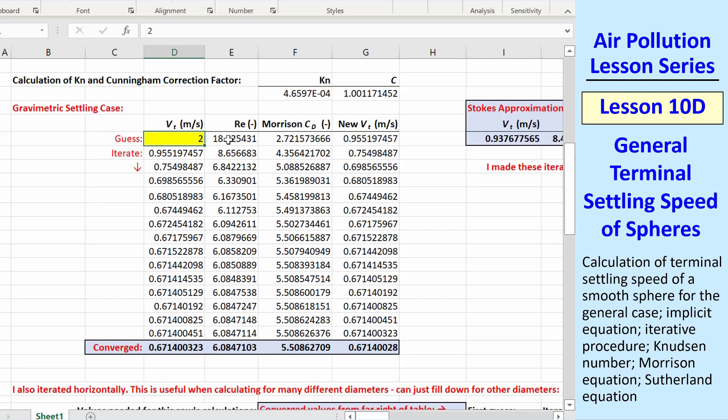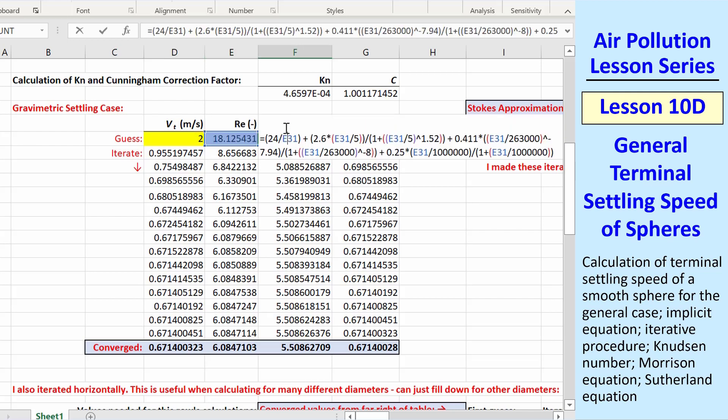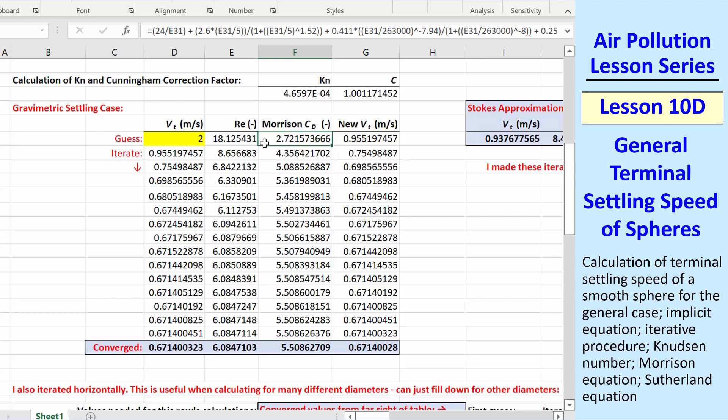And here I set up my iteration procedure. My first guess, my Reynolds number. Remember, the Morrison drag coefficient, which is a huge equation for Excel. But again, once you set it up,